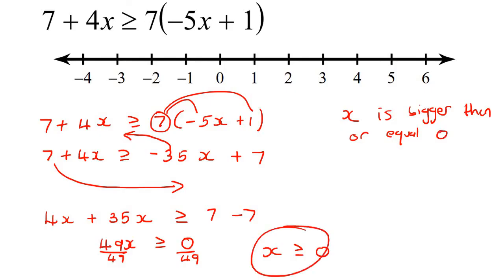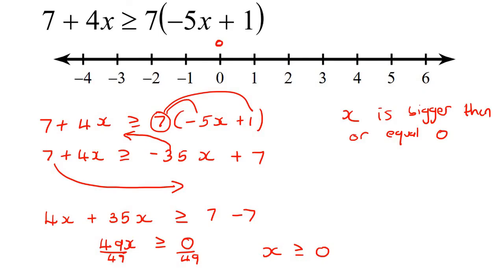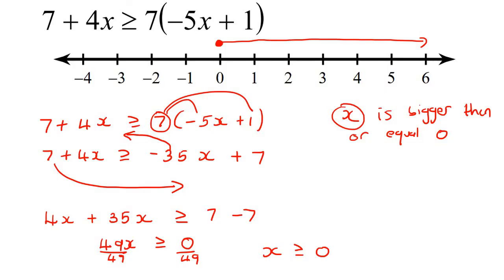On our number line, we go to 0. Because there's a little line under the symbol, we make a closed circle. Since x is bigger, we go to the right — the bigger side. x is bigger than or equal to 0, so x can be 0, 1, 2, 3, 4, 5, and so on. x is all the numbers bigger than or equal to 0, and so there's our answer.